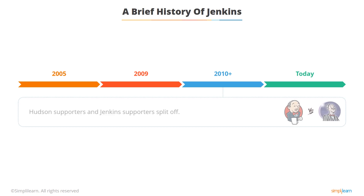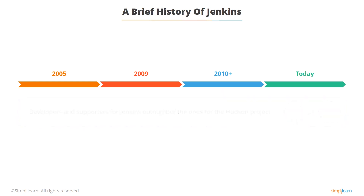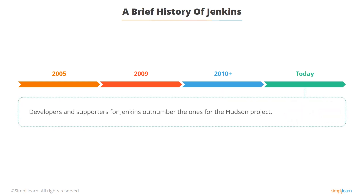The dispute between Sun Microsystems and Oracle caused a split between developers as well. The Hudson project supporters even started referring to Jenkins as the forked project of Hudson. The rivalry continues on today between Hudson and Jenkins developers, but Jenkins surpasses Hudson's developers by a long shot as their numbers continue to rise.